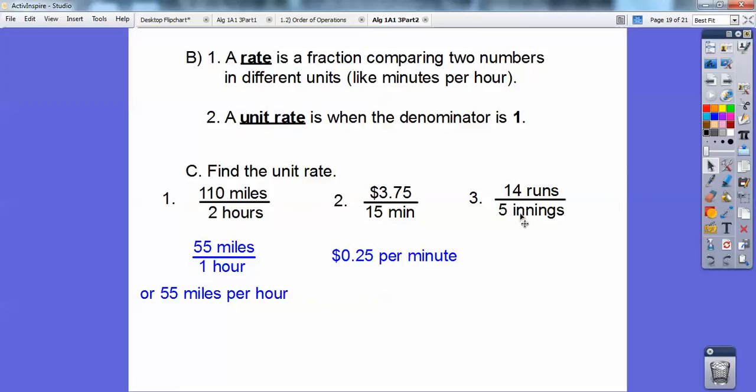14 runs per five innings. So you're going to divide five into 14 and you get 2.8 runs per inning. So a unit rate is to make sure that denominator equals one. All right, good job, you guys.